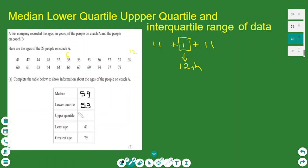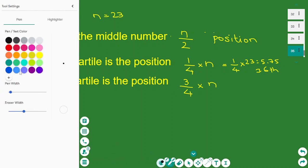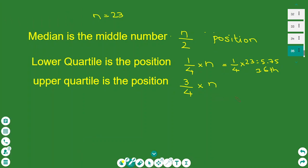And let's find the upper quartile. The upper quartile, according to the definition, is the position of the number that lies three quarters of the total. So all I need to do is three quarters times the 23.